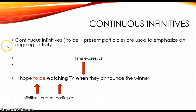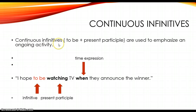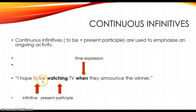Now let's talk about continuous infinitives. Continuous infinitives are used to emphasize an ongoing activity. When we see the word 'continuous,' we know it's ongoing. From our verb forms, continuous generally means there's going to be an -ing at the end of the verb. The formula for continuous infinitives is: to be plus the present participle. Here's an example sentence: 'I hope to be watching TV when they announce the winner.'